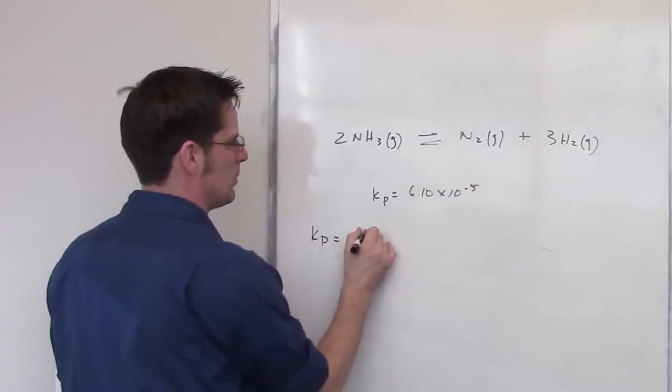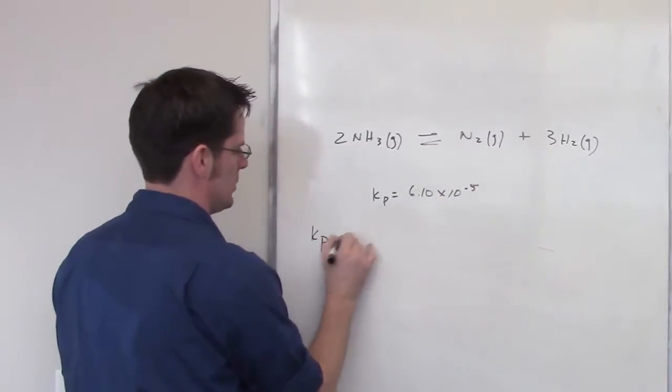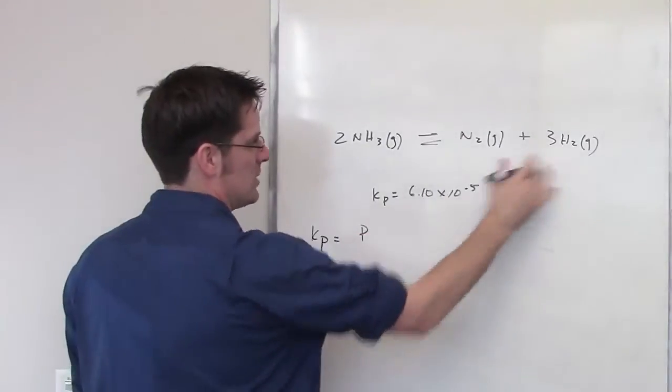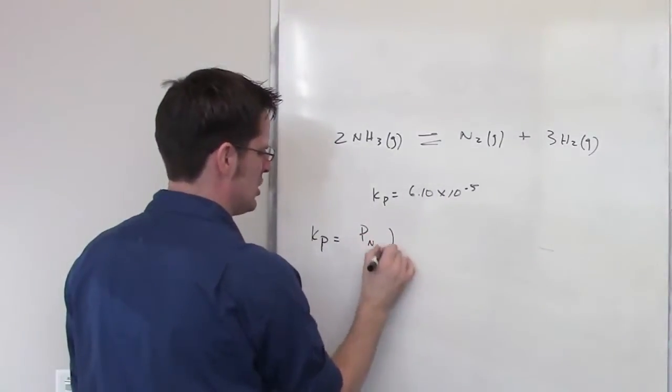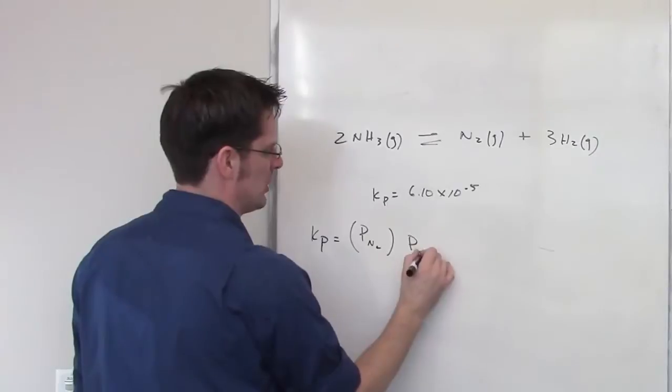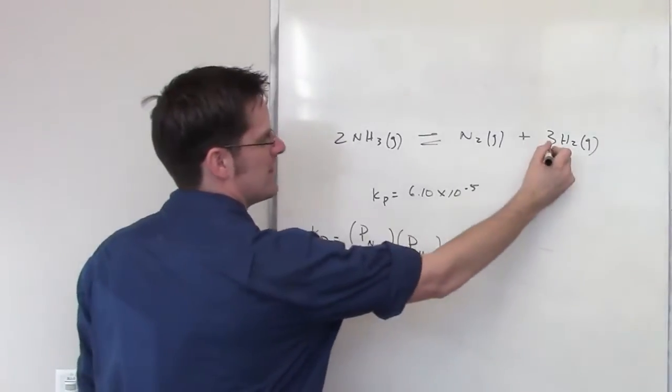Kp is going to be equal to the equilibrium pressures, so I'll write down the pressure of each of the products, N2, multiplied by the pressure of H2, and see that 3?